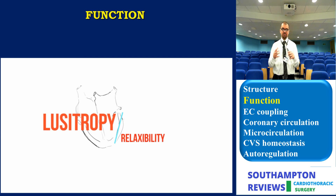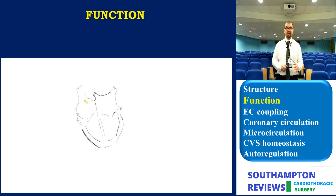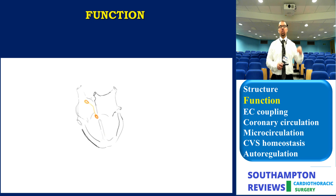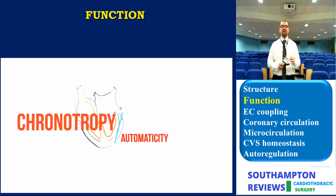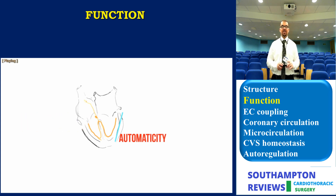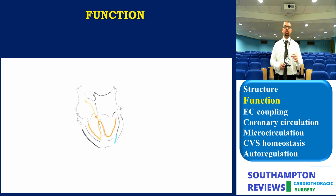The third property — where some confusion happens — is referred to as chronotropy, or automaticity. It is the ability to generate an innate rhythm which is subsequently modifiable; it can become either faster or slower depending on various neural and hormonal mechanisms. Number four is dromotropy, or conductivity.